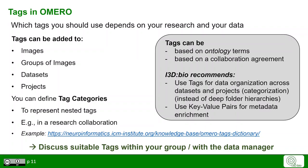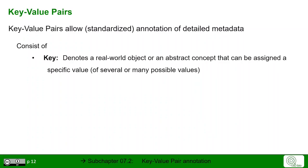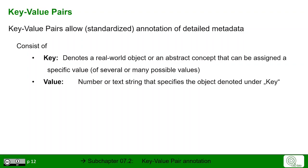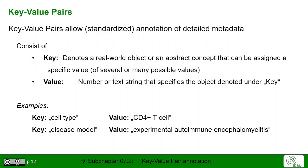We recommend using tags for data organization across datasets and projects in terms of categorization — instead of deep folder hierarchies you might be used to from file systems — and then using key-value pairs for the enrichment of metadata details. Key-value pairs consist of a key, which denotes a real-world object or abstract concept, assigned a specific value — a number or text string. Examples: the key is 'cell type' and the value is 'CD4-positive T cell,' or the key is 'disease model' and the value could be 'experimental autoimmune encephalomyelitis.'